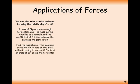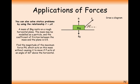A mass of 8 kg rests on a rough horizontal plane. The mass may be modelled as a particle, and the coefficient of friction between the plane and the mass is 0.5. Find the magnitude of the maximum force P which acts on the mass without causing it to move, if P acts at an angle of 60 degrees to the horizontal. So slightly the same question, but we've got P now acting at an angle. The only direction this can move in is to the right or stay stationary, so we'll resolve the P force.